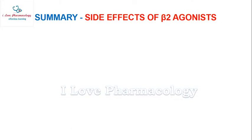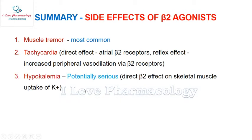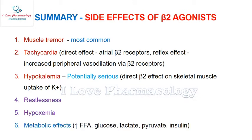In summary, the side effects of beta-2 agonists are: muscle tremor (most common), tachycardia and palpitation (due to direct atrial beta-2 stimulation and reflex peripheral vasodilation), hypokalemia (most potentially serious — direct beta-2 effect on skeletal muscle potassium uptake), restlessness, hypoxemia, and metabolic effects including increases in free fatty acids, glucose, lactate, pyruvate, and insulin.